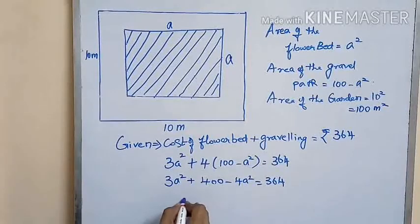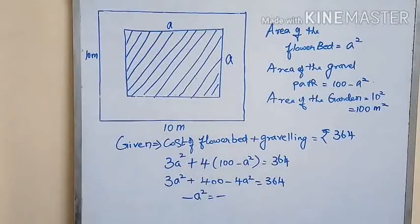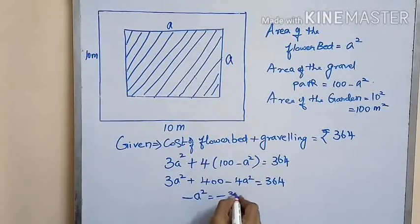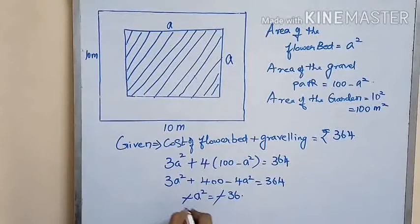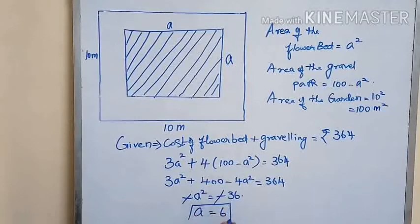Solving the quadratic equation, we get minus a squared is equal to minus 36, so a squared equals 36, which implies a is equal to 6.